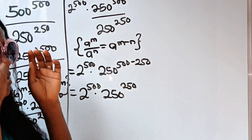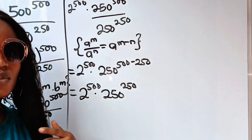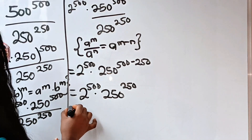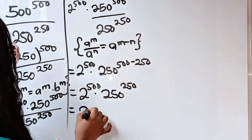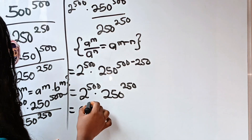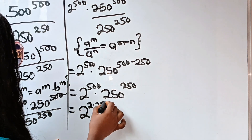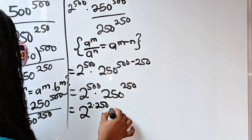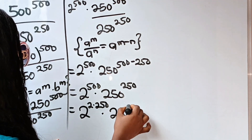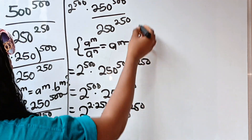Note that 500 is the same thing as 2 to the power of 250. So we can write this as 2 to the power of (2 × 250), then multiplied by 250 to the power of 250.